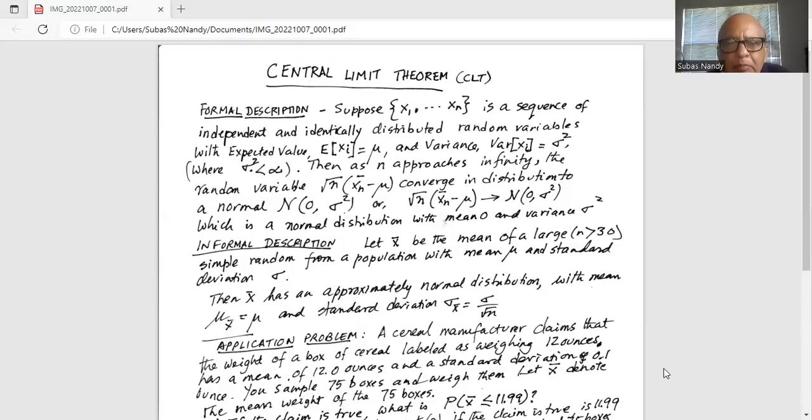Minus mu, where mu is a population average, converges in distribution to a normal N with a mean of zero and variance of sigma squared.